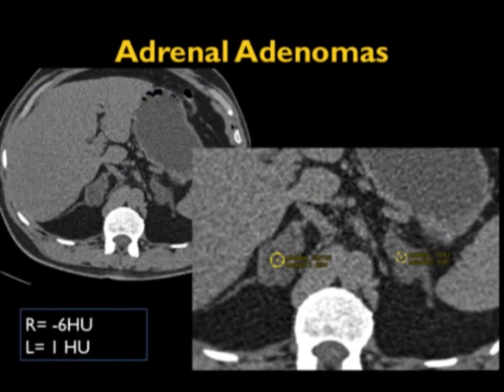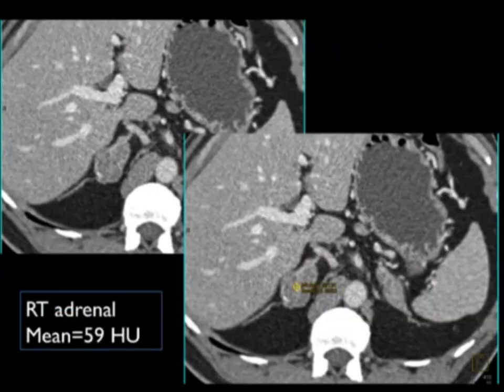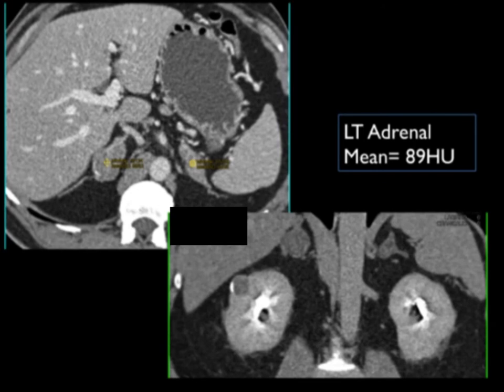These washout values work in patients with bilateral adrenal adenomas. In this case it would have been declared benign based simply on the non-contrast scans — minus six and one Hounsfield units respectively. But when contrast was given, the right adrenal went to 59 and the left went to 89 HU. You need to be very careful: if you only have arterial phase imaging, you really could not make the diagnosis of a lipid-poor adenoma in those scenarios.